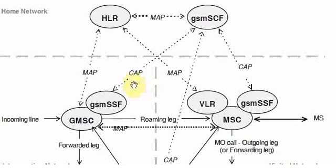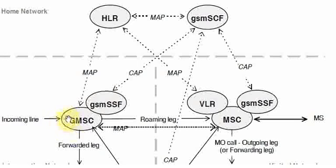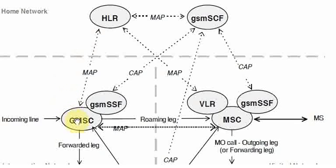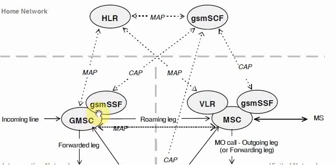So that was all about originating calls. For terminating calls, subscribers get charged for terminating calls also in some countries. GSM-SC is in the picture. When a subscriber moves from home network to visited network, HLR copies the PCSI number — which is the terminating CAMEL subscriber information number — to GSM-SC. When a terminating call happens, it goes via GSM-SC, and GSM-SC contacts SCF to provide a service to the subscriber like balance deduction.